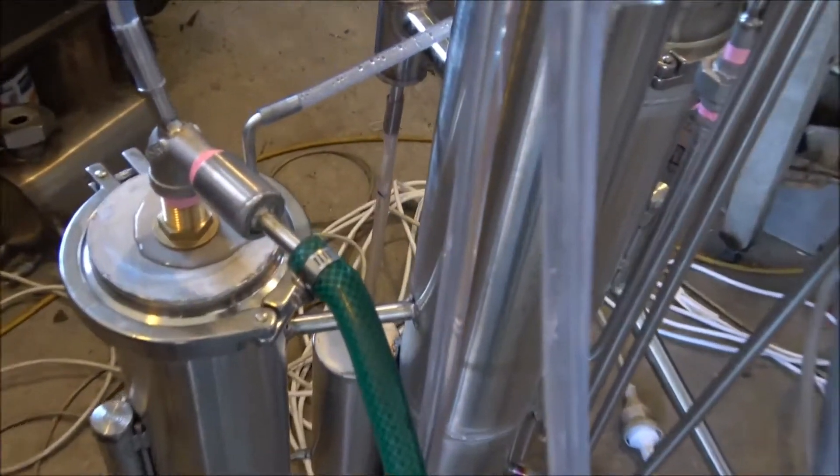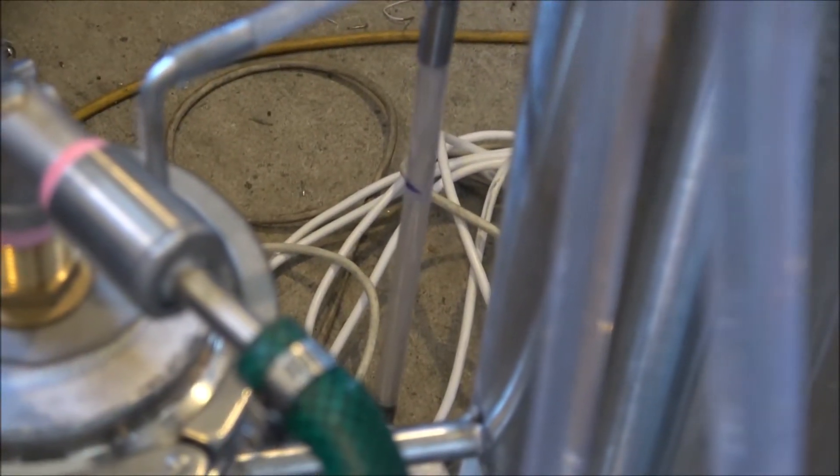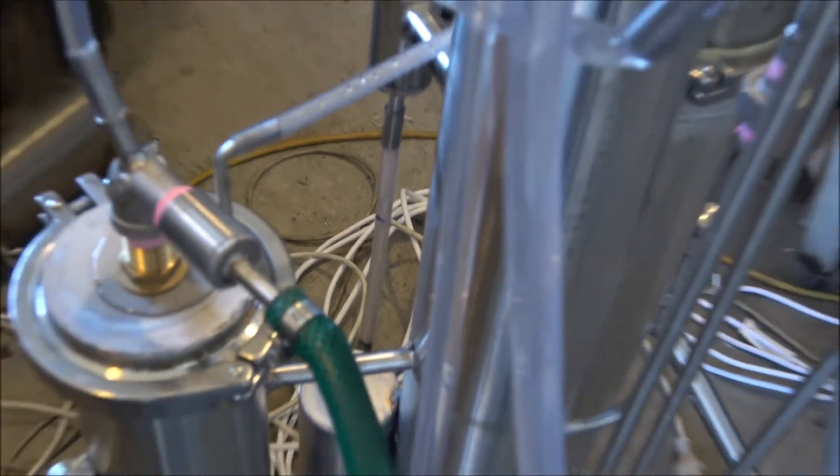Now here we can see the control transparent tube that shows the level of the water within the steam generator.